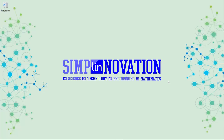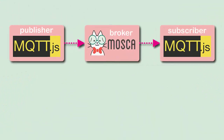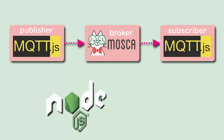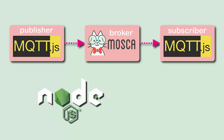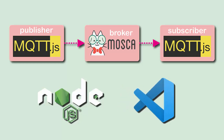Hi everyone, welcome back to SimplyNovation. In this video I'm going to show you a step-by-step tutorial on how to create your own JavaScript-based MQTT broker and its client. I'll use Mosca to create the broker, and MQTT.js to create a publisher and subscriber. Make sure you have Node.js installed, and I'll use Visual Studio Code as my code editor.